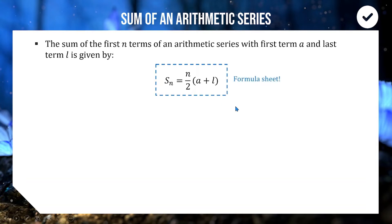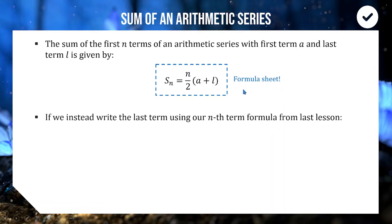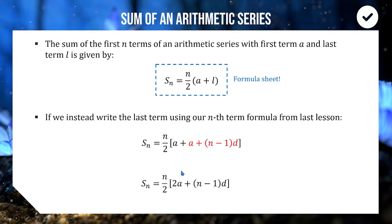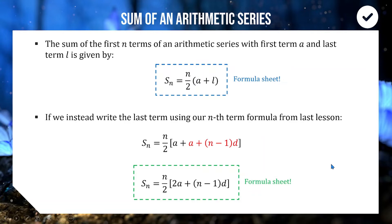This formula is on the formula sheet, but it's quite circumstantial since we often don't know the last term. We can replace l with the nth term formula from the last lesson: T_n = a + (n−1)d. Simplifying by combining the a terms, we end up with S_n = n/2 × (2a + (n−1)d). This green formula is much more useful because all you need to know is a, d, and n.